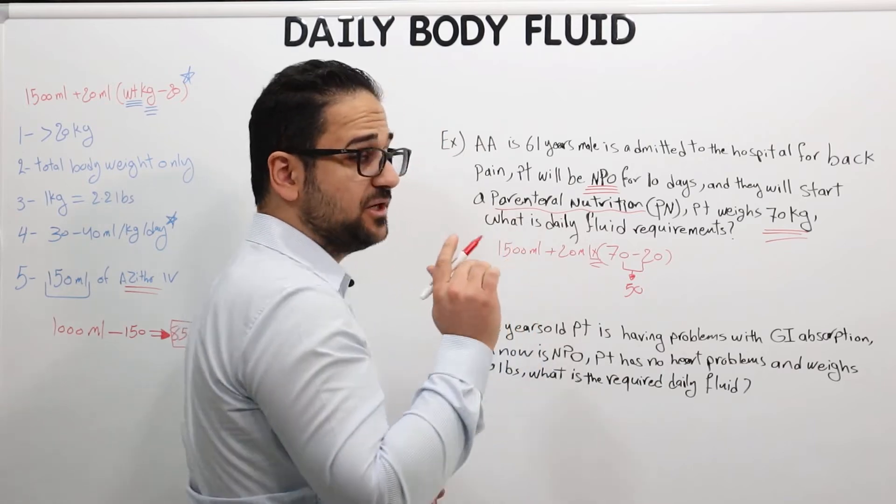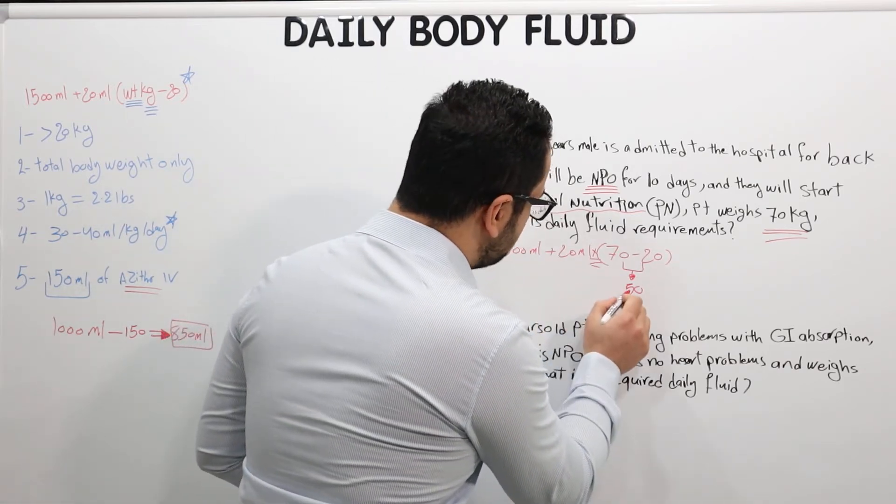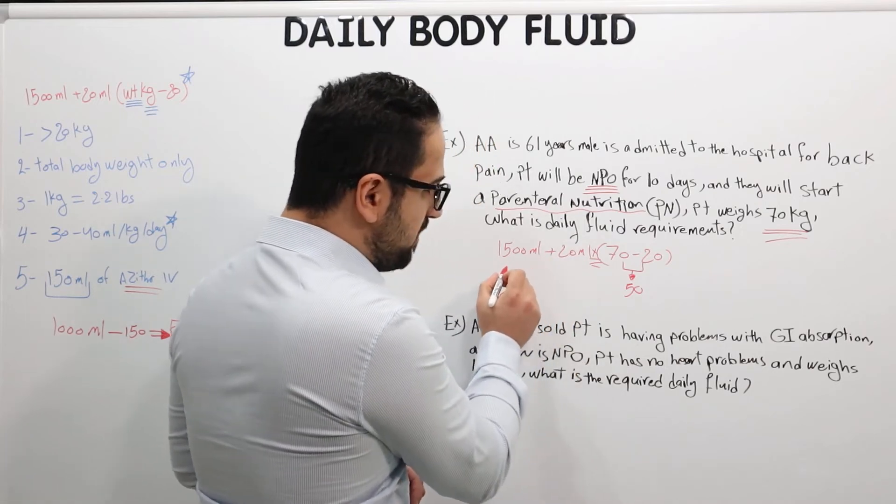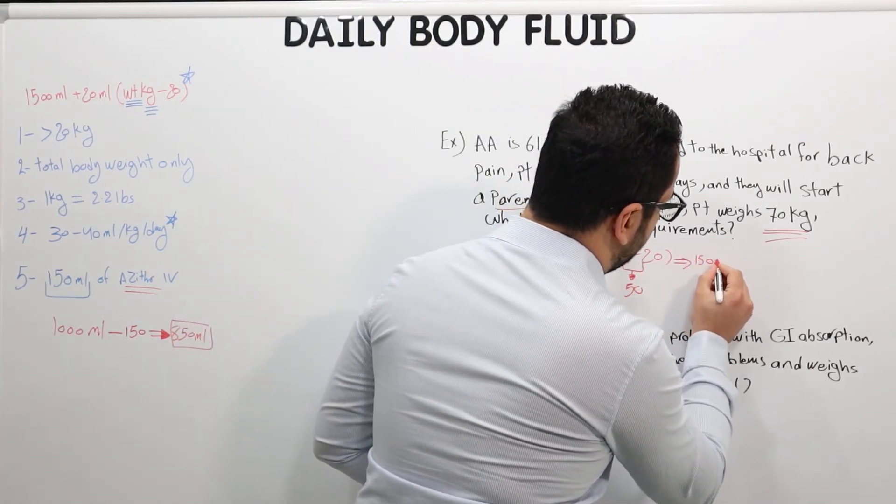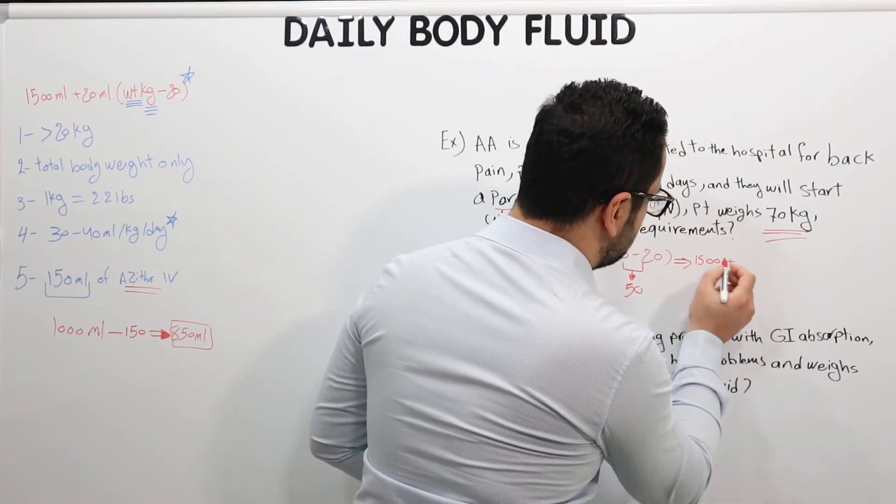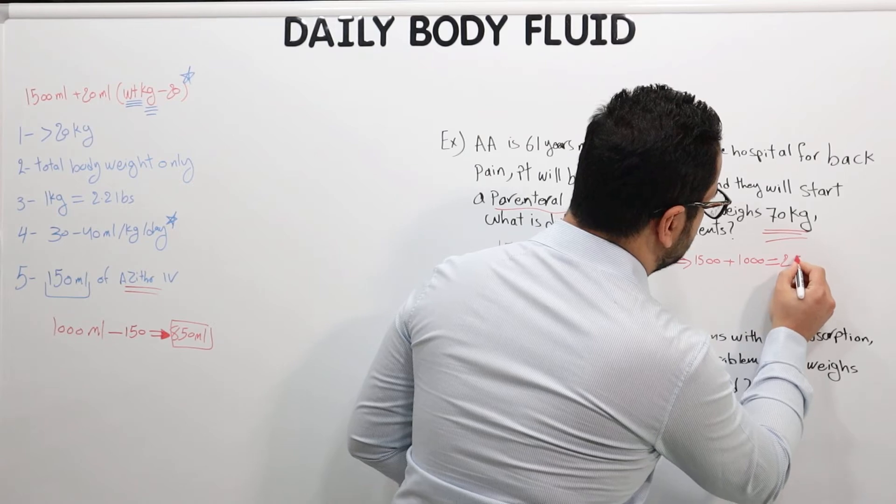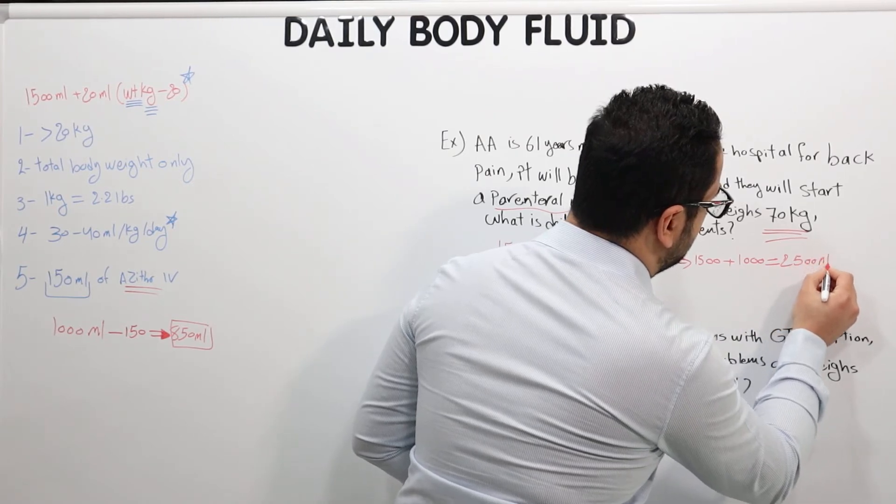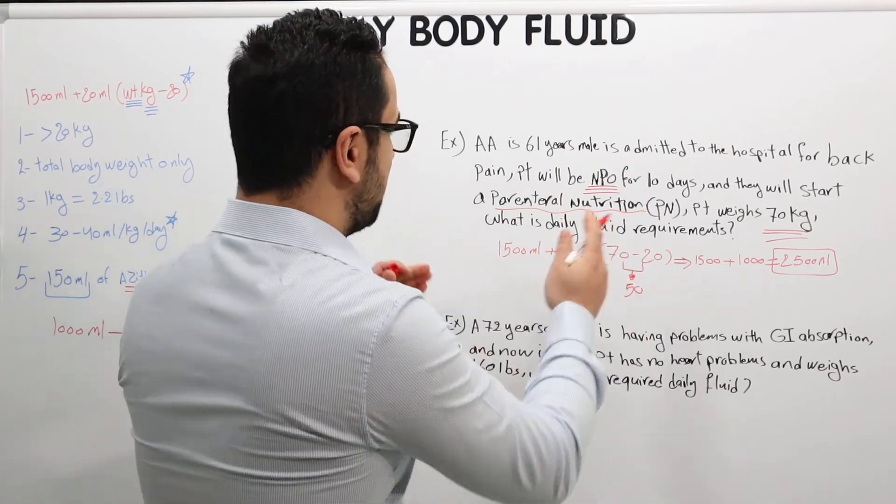Don't add these two and then multiply. Multiply before the addition. It's very important. So 20 times 50, that's 1000. Plus 1000 and a half, so this is 1000 plus 1500 equals 2500 milliliters daily requirement for this patient. So that's question number one.